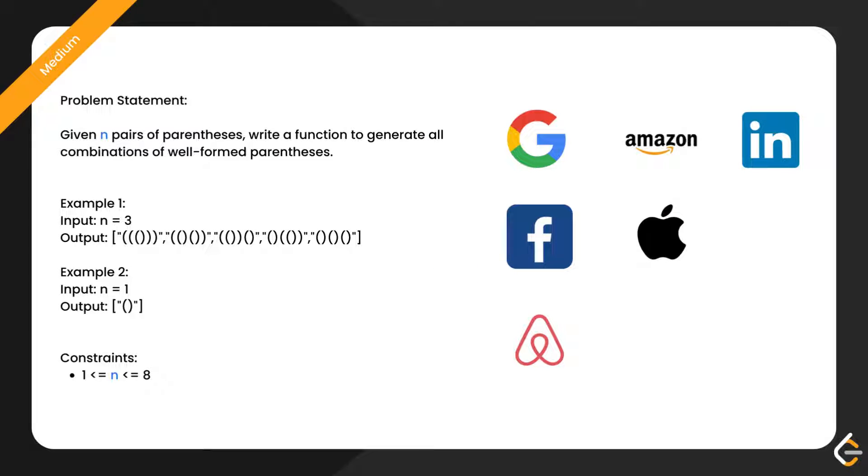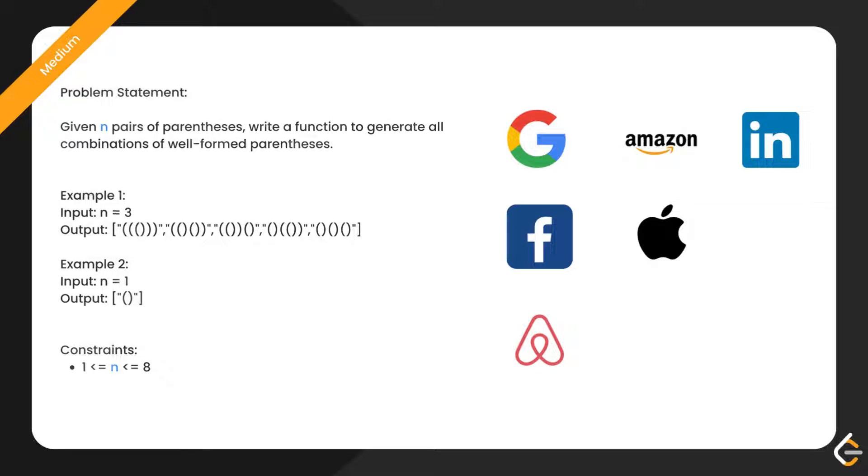Given n pairs of parentheses, we need to write a function to generate all combinations of well-formed parentheses. For example, if n is 1, output will be opening parentheses and closing parentheses.